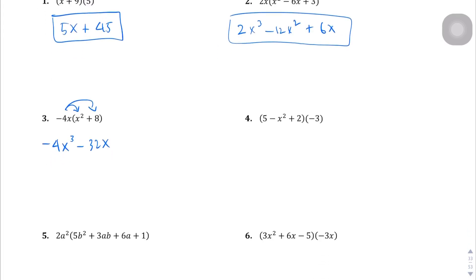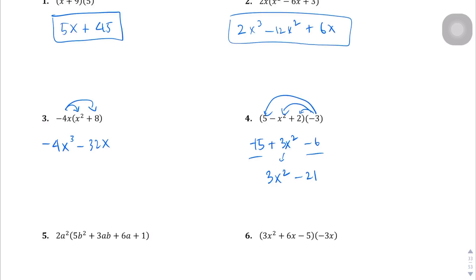Question number 4. Negative 3 is going to go with that 5, so it's negative 15. And then the x squared multiplies with that — there's nothing to combine there, so you just rewrite it as a positive 3x squared. Then lastly, negative 3 times positive 2 gives me negative 6. And look — we have like terms here, so let's combine those. 3x squared is the first one, and then negative 15 plus negative 6 is going to give minus 21.